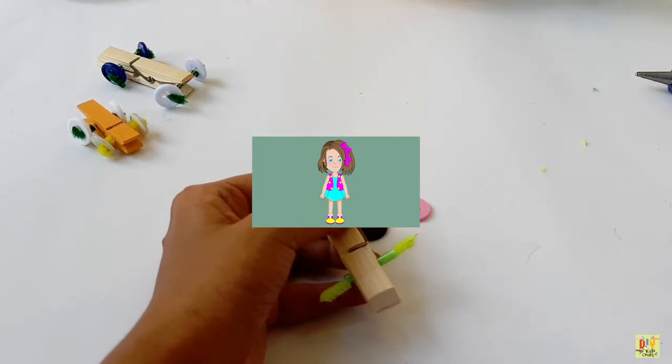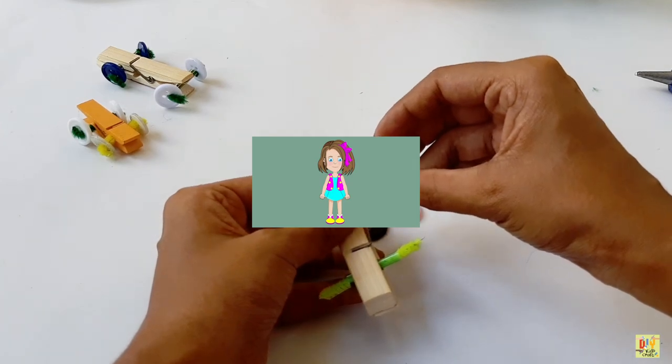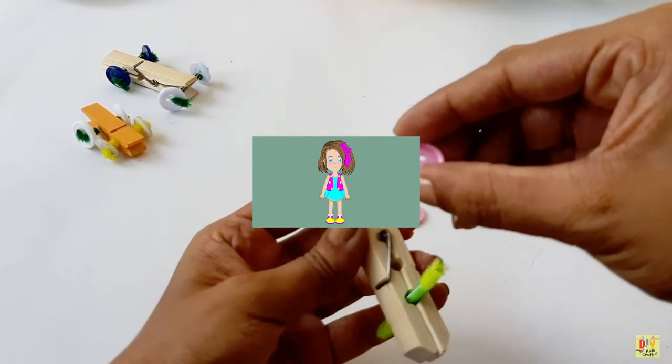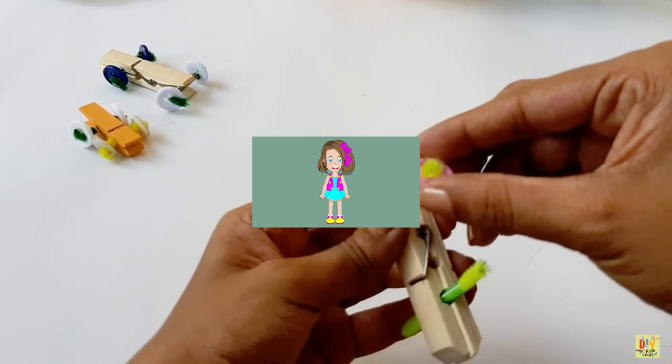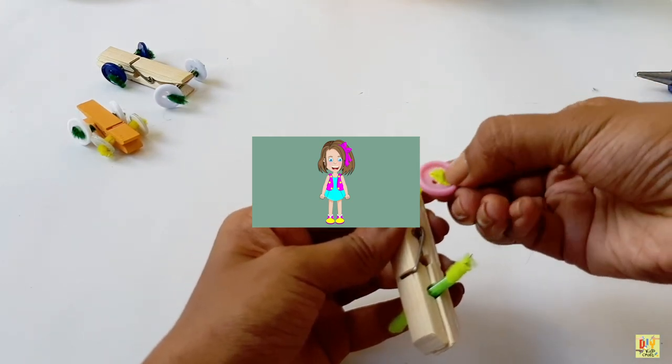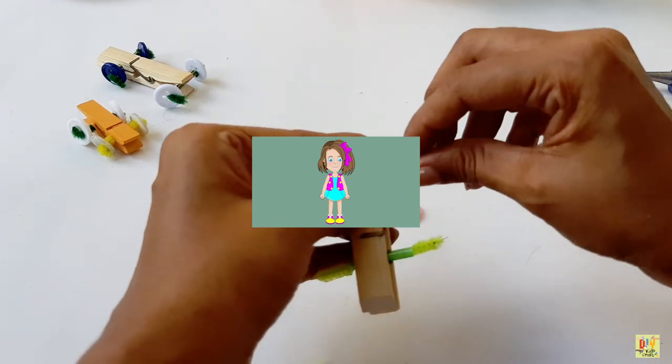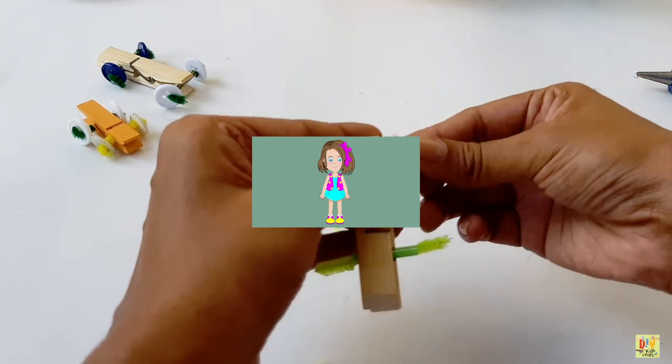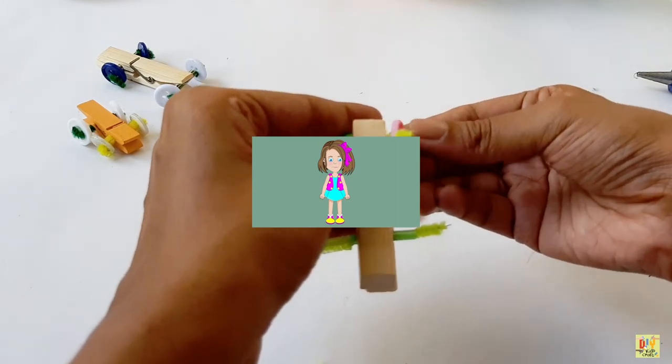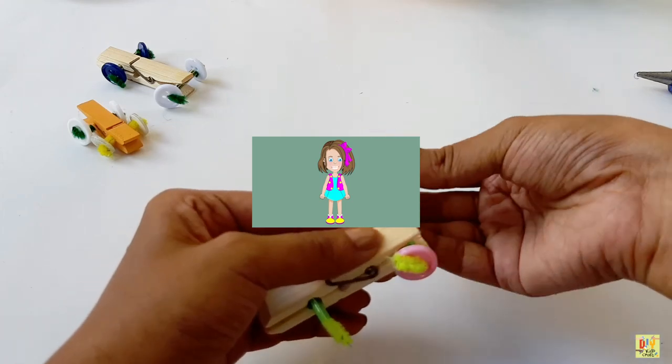Using a button, insert this tiny wire and fold the edge like that to hold the button. Then on the other side, do the same thing.